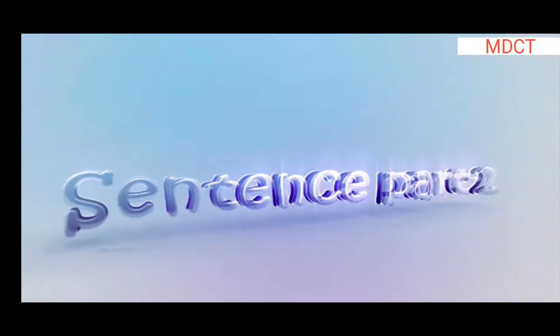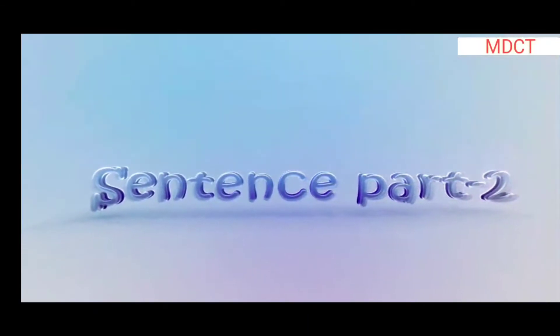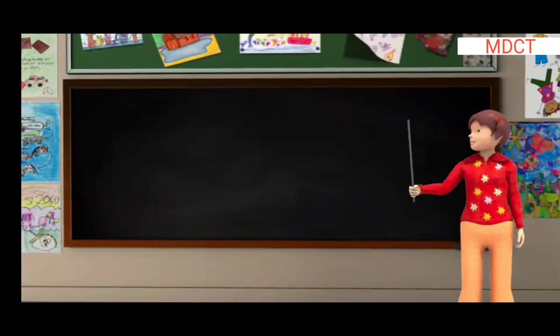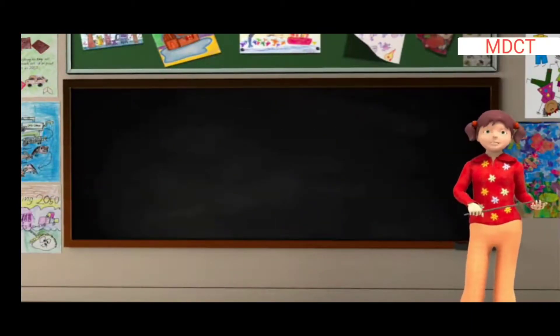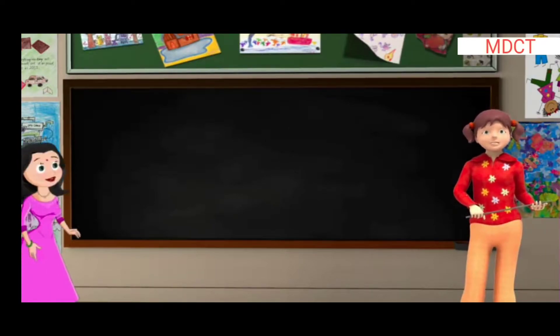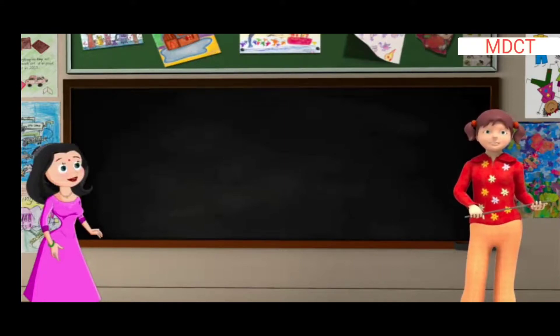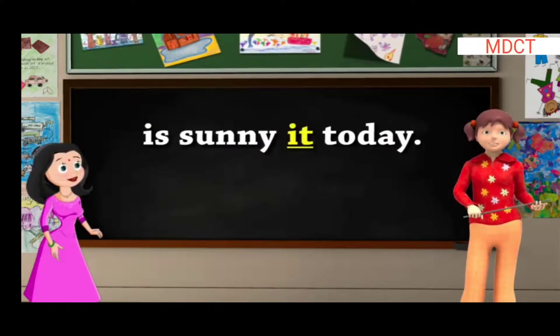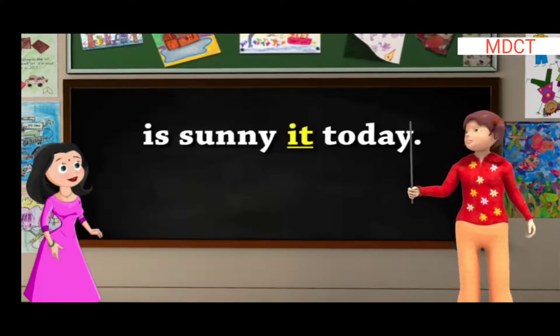Sentences, Part 2. Children, here we are given some jumbled words. Let us see how Tina forms sentences out of them. Note, the first word of the sentence is already underlined.